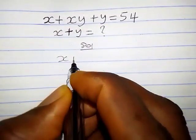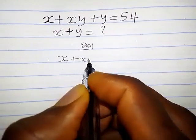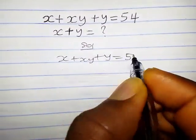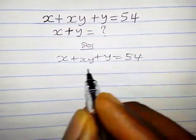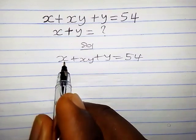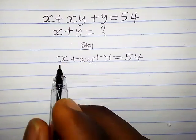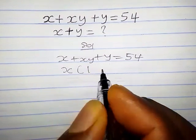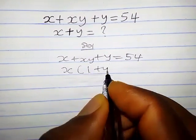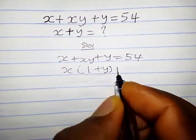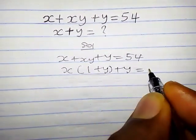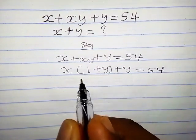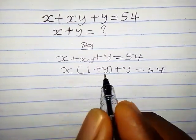The question says x plus xy plus y equals 54. The first step we are going to take is that x is common, so let us pull it out. So we have x into 1 plus y, plus y equals 54.